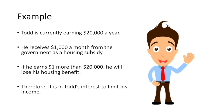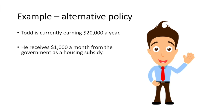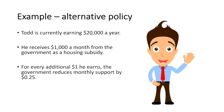Now let's look at an alternative policy that would encourage him to work more. Todd is currently earning $20,000 a year and receives $1,000 a month from the government as a housing subsidy. For every additional dollar he earns, the government reduces monthly support by $0.25. It is now in Todd's interest to increase his income.